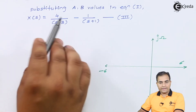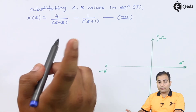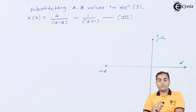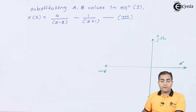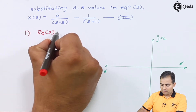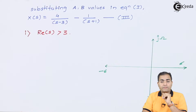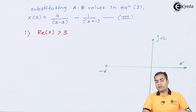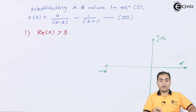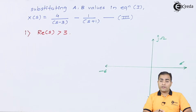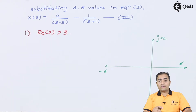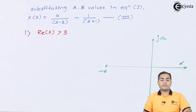Now we apply the inverse Laplace transform based on each ROC. For ROC 1: Re(s) > 3. This means the ROC is on the right-hand side of the pole at s = 3, so this is a causal or right-handed sided ROC. According to the properties of ROC, if the function produces a right-handed sided ROC, the ROC is marked on the right-hand side of the rightmost pole.